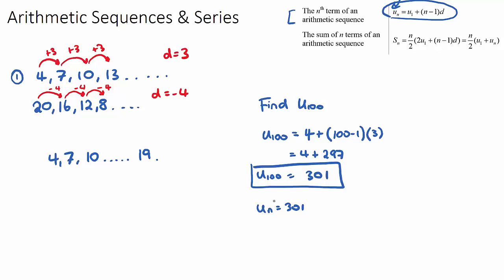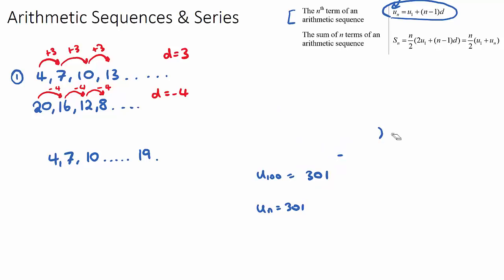An arithmetic series is the sum of all of the terms in an arithmetic sequence — series stands for sum. For our example, if the question said find the sum of the first 10 terms, we'd write it as S10, meaning the sum of the first 10 terms. We can use the second formula in our formula booklet: the sum of n terms of an arithmetic sequence.